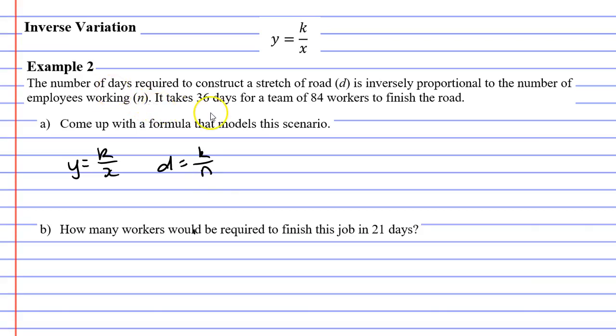It said here that it takes 36 days for a team of 84 workers to finish the road. Now, 36 days is what D equals. D is 36, and 84 workers is what N equals. N is 84. So we can substitute these two values into our formula.